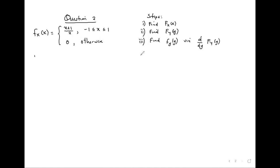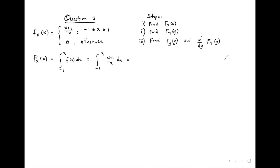For step one, F_X(x) = integral from -1 to x of f(u) du. Substituting f(u) = (u + 1)/2 and integrating from -1 to x of (u + 1)/2 du. Integrating gives (u²/2 + u)/2 evaluated from -1 to x. This equals one-half times [x²/2 + x] minus one-half times [1/2 - 1], which simplifies to x²/4 + x/2 + 1/4.